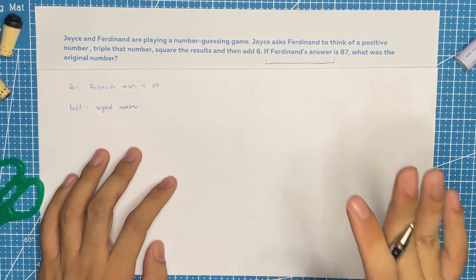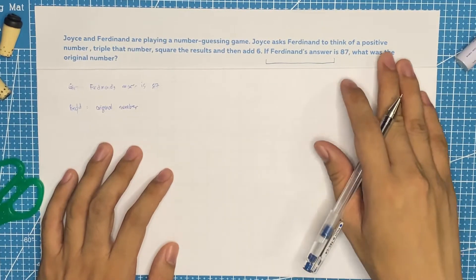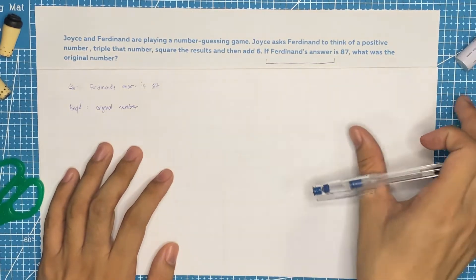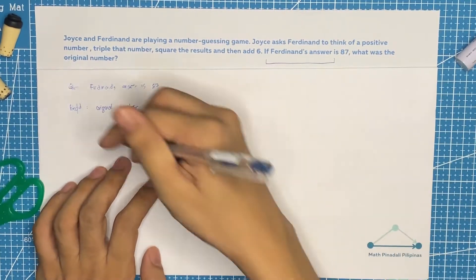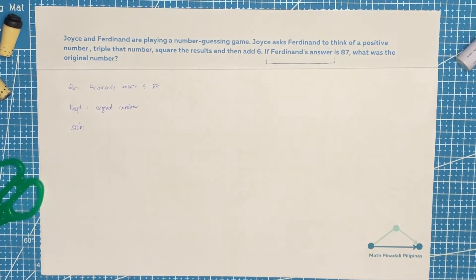Now again, what we're going to do for this problem is we'll be using inverse function first to solve for the original number. Then let's try to solve this one with our normal solution. So for the solution, let's go back.